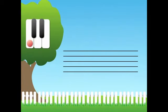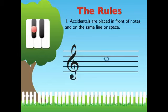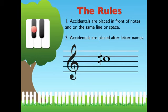Here's a C and we'll move it up a semitone to C sharp. Let's draw it in the treble clef. But first you need to know a couple rules. Number one: Accidentals are placed in front of notes and on the same line or space. And number two: Accidentals are placed after the letter name.